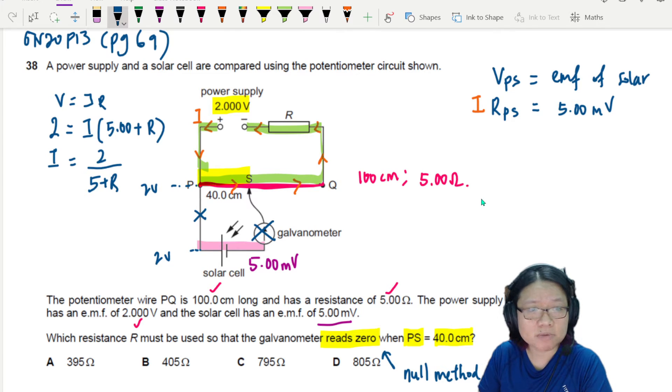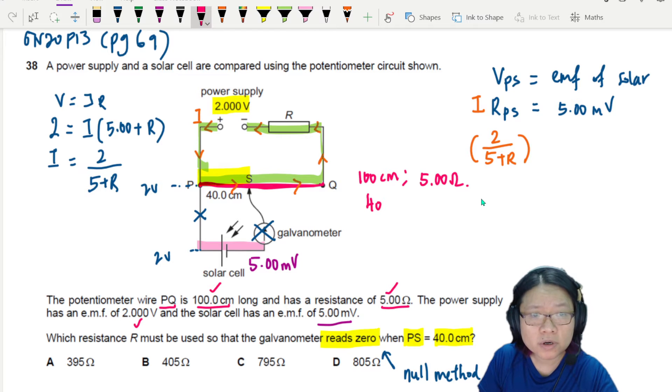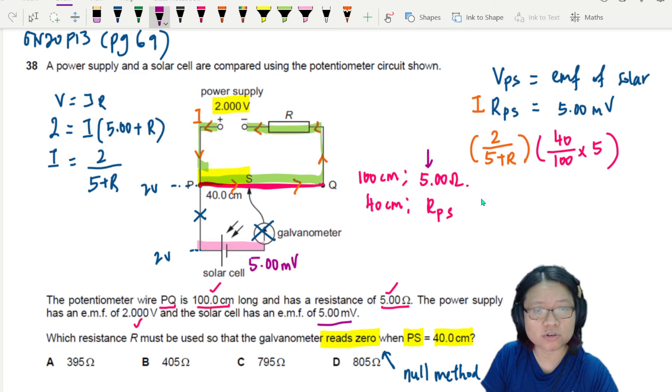I is equal to 2 over 5 plus R. In this case, I can now substitute the value of I here. In fact, we are looking for R so we can keep it there. Then you think to yourself, what about PS? How do I find the resistance of PS? Well, I know the resistance of the whole wire PQ. The wire PQ is 100 cm long, 5Ω. So if 100 cm is 5Ω, 40 cm will be - ratio is your best friend. So I will take 40 over 100 times the total resistance 5. This is RPS, because this one here, 5Ω is RPQ and the length PQ is 100.